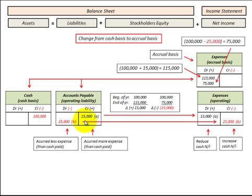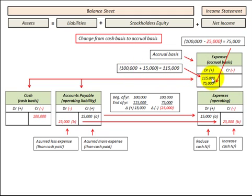Where accounts payable increases by fifteen thousand dollars for the year, we'd recognize an increase in our expense of fifteen thousand for the year. We'd add this increase of fifteen thousand dollars to the cash paid of a hundred thousand dollars, giving us an accrual basis expense of a hundred and fifteen thousand dollars.